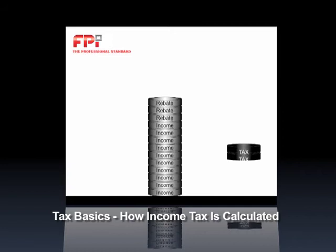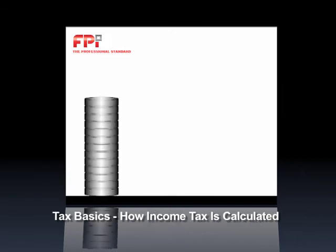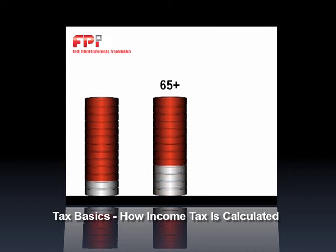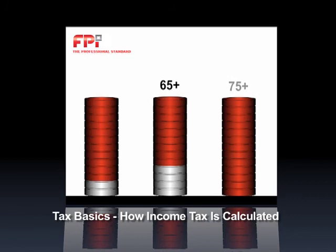The net effect of these rebates is that there's an income threshold below which you do not pay tax. Once you turn 65, the income threshold below which you pay no income tax is raised, and that income threshold is raised again when you turn 75. The reason for these thresholds is to reduce the income tax burden for low income earners and senior citizens in the country.